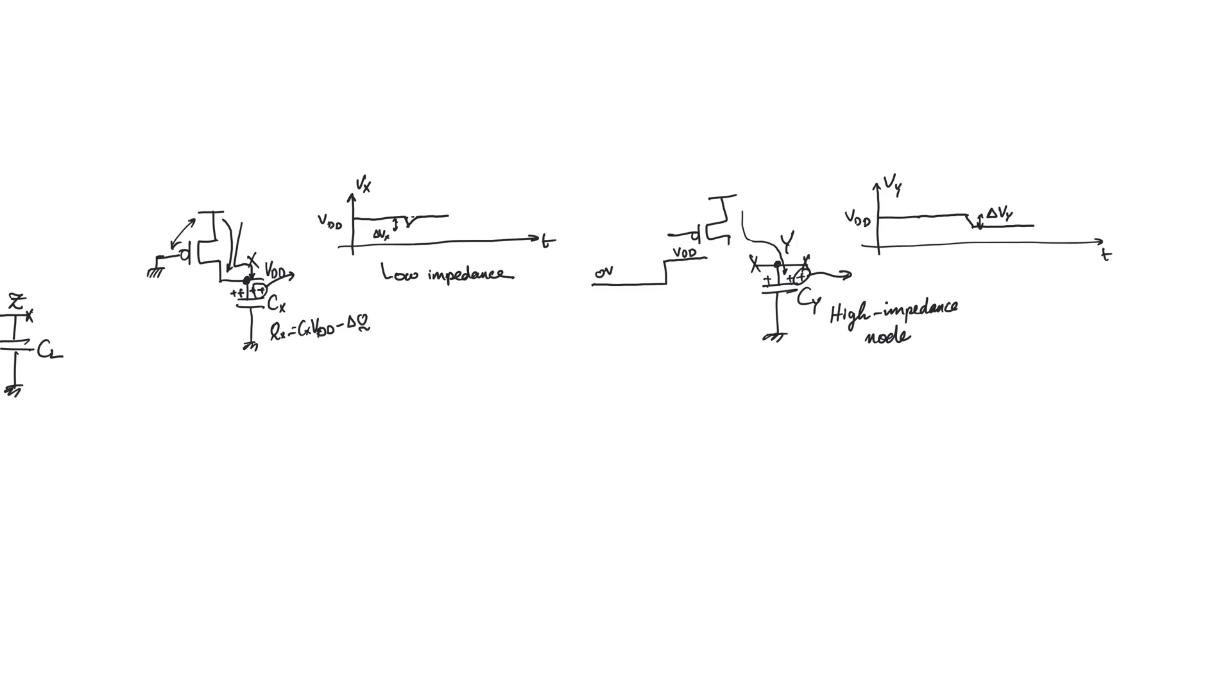And on node Y, on the other hand, there is a VDD, but it is caused by charge that has been trapped on the plate of the capacitor. Once some of the charge is taken away, this loss in voltage is irreplaceable until we create a path back to supply.